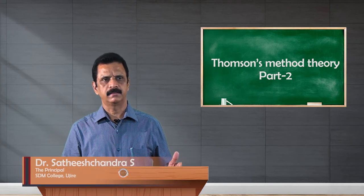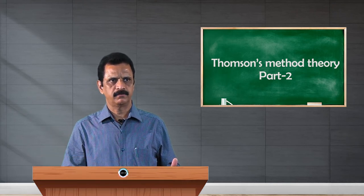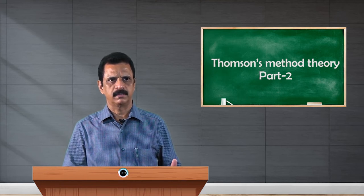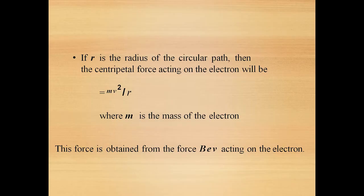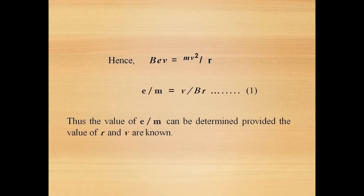Let us discuss the theory of the experiment E by M by Thomson's method. We have been discussing the effect of magnetic field on moving electrons, and in the presence of a magnetic field, the spot is formed at S2 on the fluorescent screen. If R is the radius of that circular arc, the necessary centripetal force required for circular motion is given by MV² by R, where M is the mass of the electron, R is the radius, and V is the velocity of electrons. This force is provided by the Lorentz force BEV — the magnetic force developed due to the motion of electrons under the influence of the magnetic field.